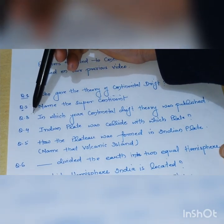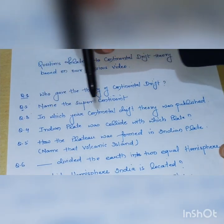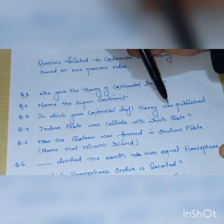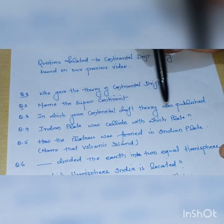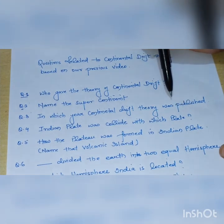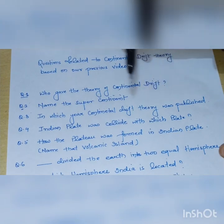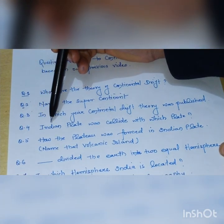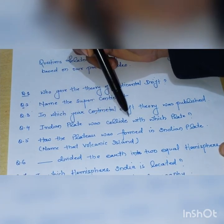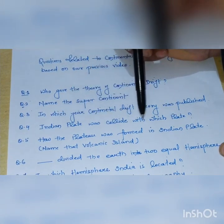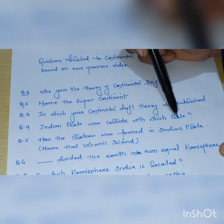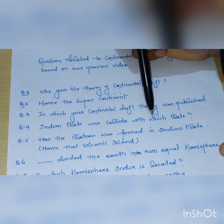Third question: in which year was the continental drift theory published? Answer is 1912. Fourth question: the Indian plate collided with which plate? Answer is the Eurasian plate.